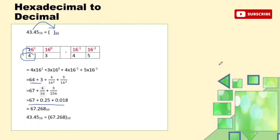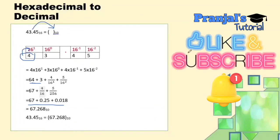So I have shown you how to convert the octal number system to decimal and decimal to octal, as well as hexadecimal to decimal and decimal to hexadecimal. The process is almost the same — just change the base: octal uses base 8 and hexadecimal uses base 16. Thank you for watching the video.